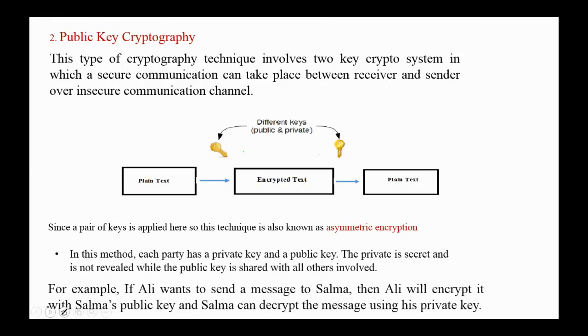The second type is public key cryptography. This type of cryptography technique involves two key cryptosystems in which a secure communication can take place between the receiver and sender over an insecure communication channel. Since a pair of keys is applied here, so this technique is also known as asymmetric encryption. In this method, each party has a private key and a public key. The private key is secret and is not revealed, while the public key is shared with all others involved.